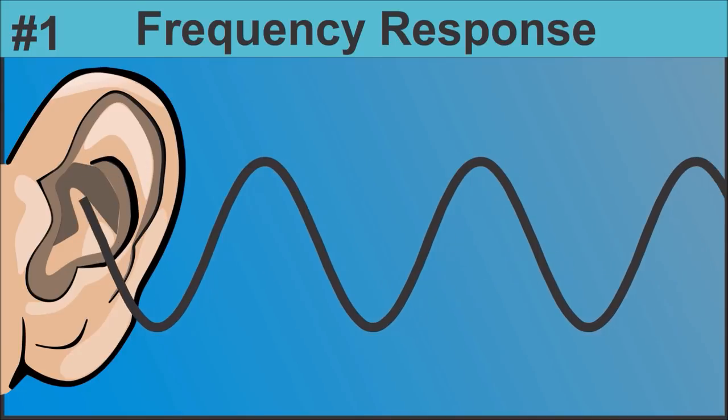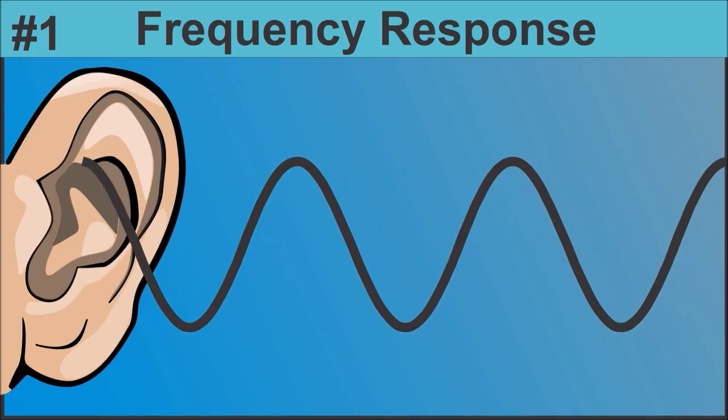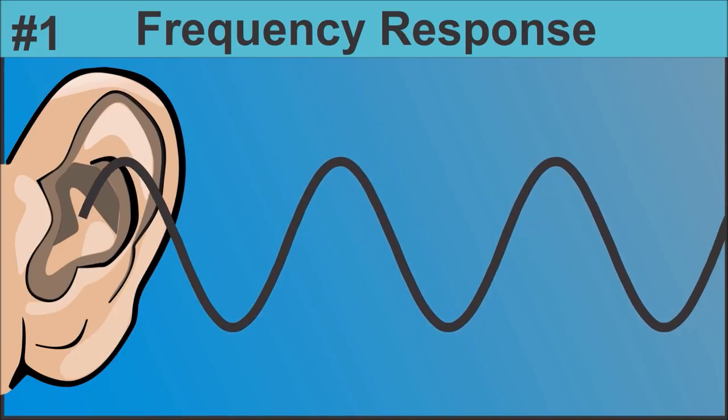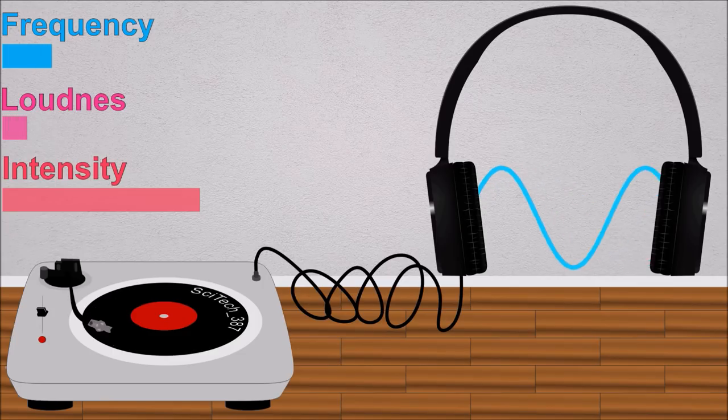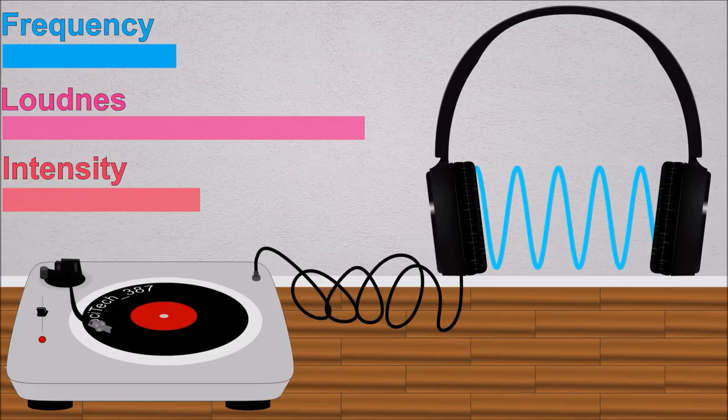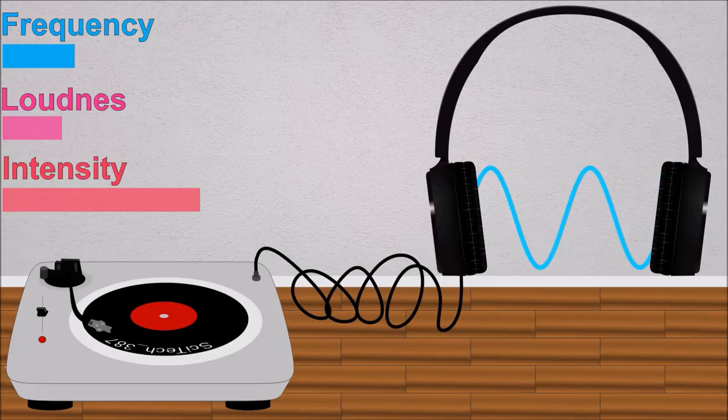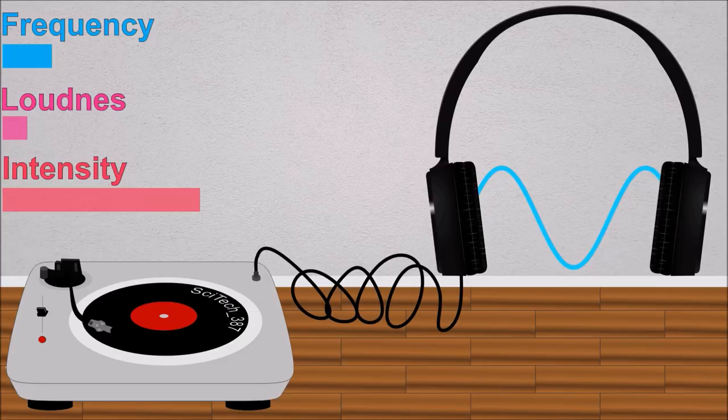The first reason is the frequency response of the human ear. We can hear sounds with frequencies from about 20 Hz to 20 kHz. But depending on the frequency, we hear sounds differently loud, even if they have the exact same intensity.